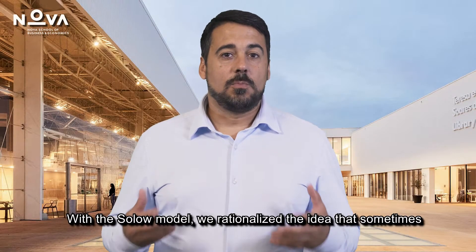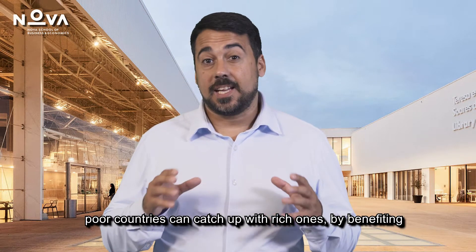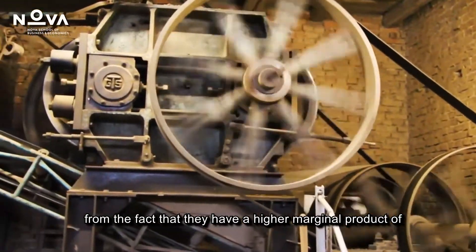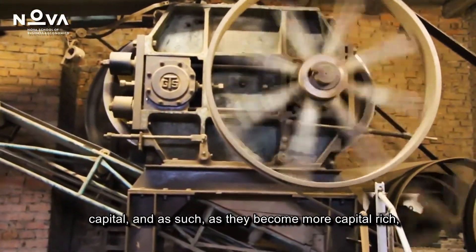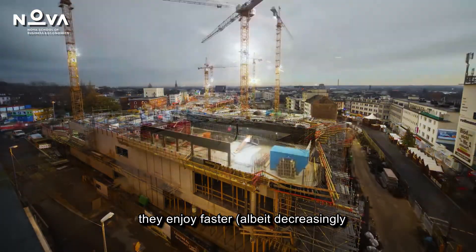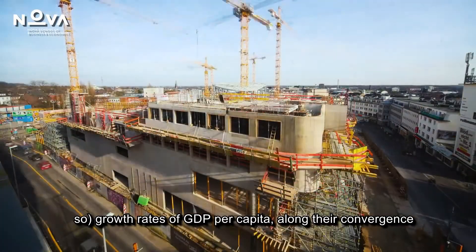Hello everyone. With the Solow model we rationalize the idea that sometimes poor countries can catch up with rich ones by benefiting from the fact that they have a higher marginal product of capital, and as such they become more capital-rich, they enjoy faster, albeit decreasingly so, growth rates of GDP per capita along their convergence path.